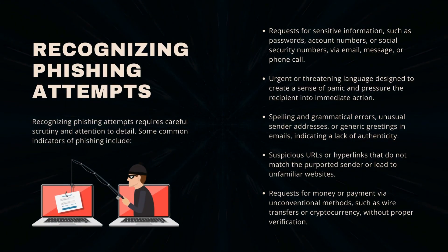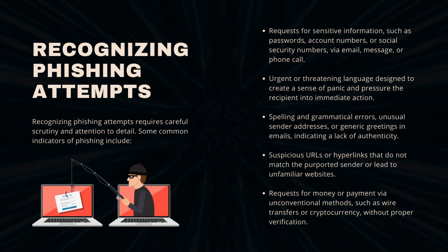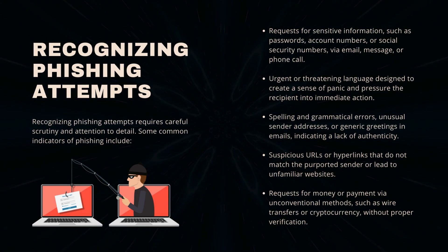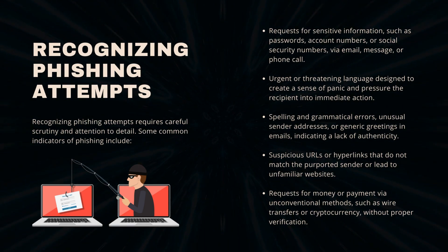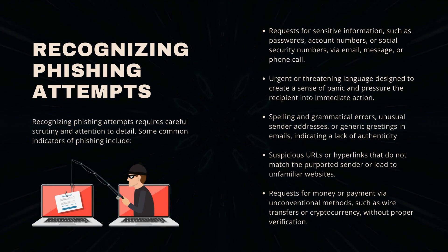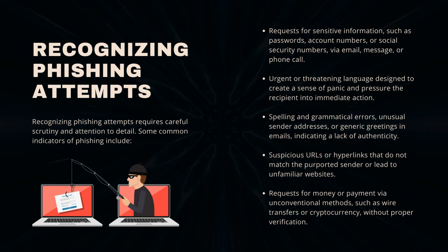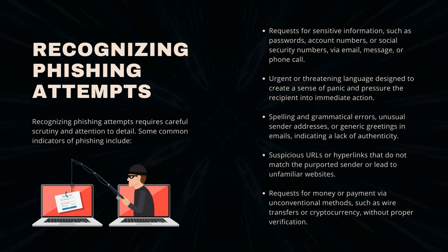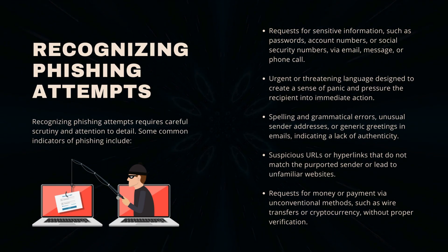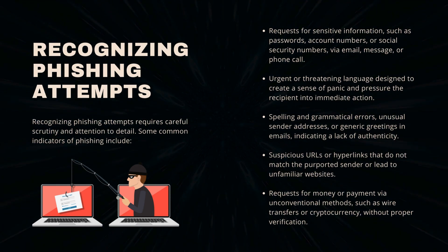Recognizing phishing attempts requires careful scrutiny and attention to detail. Common indicators of phishing include: requests for sensitive information such as passwords, account numbers, or social security numbers via email, message, or phone call; urgent or threatening language designed to create a sense of panic and pressure the recipient into immediate action; spelling and grammatical errors, unusual sender addresses, or generic greetings in emails indicating a lack of authenticity; suspicious URLs or hyperlinks that do not match the purported sender or lead to unfamiliar websites; and requests for money or payment via unconventional methods such as wire transfers or cryptocurrency without proper verification.